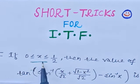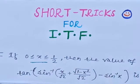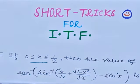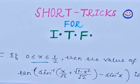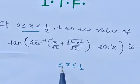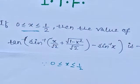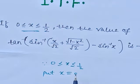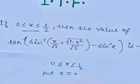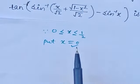The first question is: if x is less than or equal to 1/2 and greater than or equal to 0, find the value of tan of sine inverse x/√2 plus √(1−x²)/√2, minus sine inverse x. In this type of question, when the condition is x ∈ [0, 1/2], we can put x equals 0, since the equality sign is present.